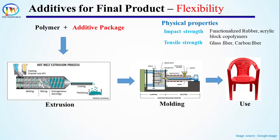The next property is flexibility. When sitting on a chair, it needs to have sufficient flexibility — otherwise it will crack like glass even at slight bending, and it won't be comfortable. To achieve desired flexibility, plasticizers are used. Plasticizers are one of the most used additives in plastics and they vary significantly in terms of chemical nature and use, so let's discuss plasticizers in more detail.